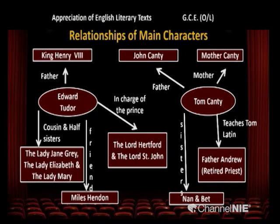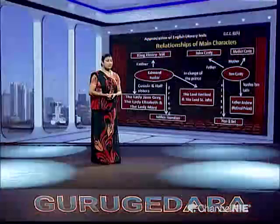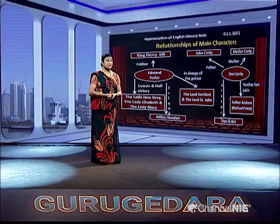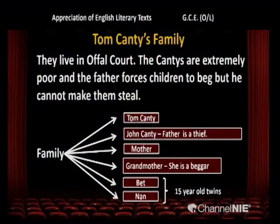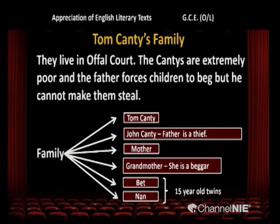Tom Canty — John Canty is the father, Mother Canty is the mother, Nan and Beth are sisters who are 15 years old, and Father Andrew teaches him Latin. Tom Canty's family lives in Offal Court. The Cantys are extremely poor and the father forces the children to beg. Tom Canty, John Canty — father is a thief. Then mother, grandmother — she is also a beggar. Beth and Nan are 15-year-old twins.